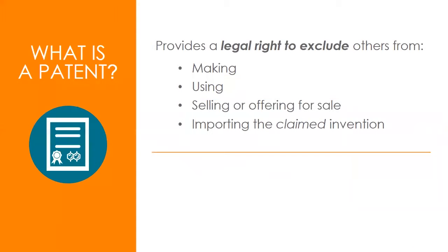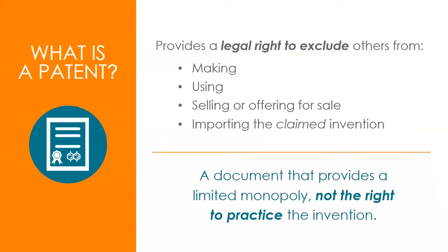We'll focus primarily on patents because that is a lot of what we see. A patent gives you the right to exclude others from making, using, selling, offering for sale, or importing an invention. It is a document that gives you a limited monopoly to prevent others from practicing your invention. Importantly, a patent never gives you the right to practice your own invention — it just gives you the right to prevent others from practicing it. So it's an exclusionary right.